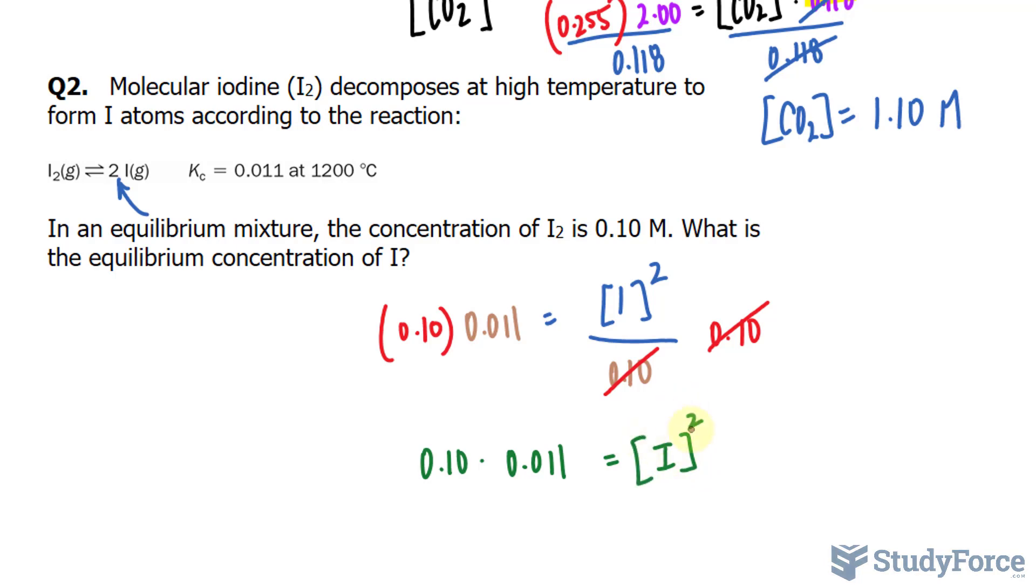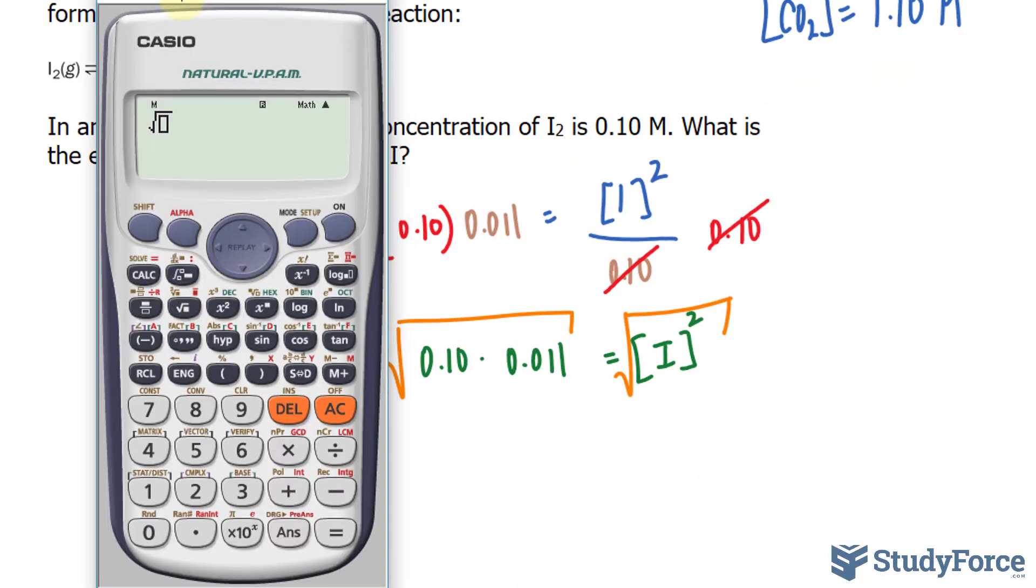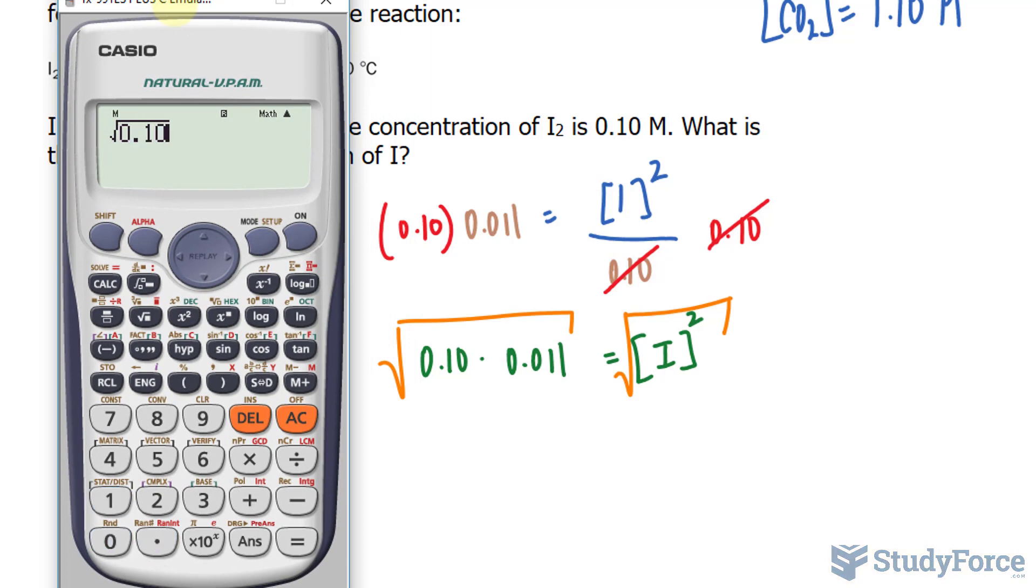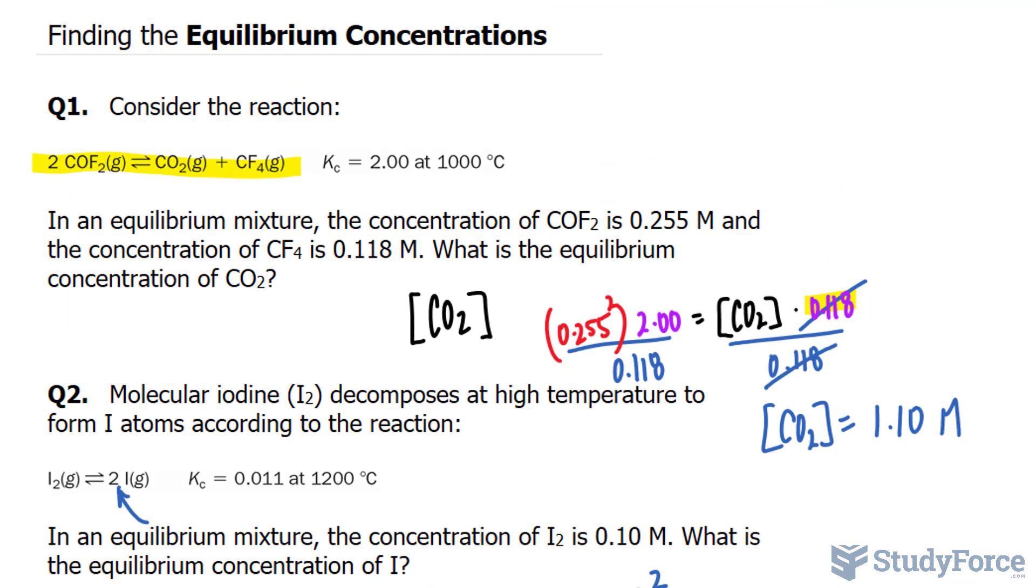To get rid of this power of two, I square root both sides. So second root, and we use our calculator. The square root of 0.10 times 0.011 gives us 0.033 as the concentration of iodine, and that's in molar. And there you have it. Two examples on how to find the equilibrium concentrations.